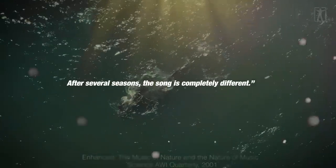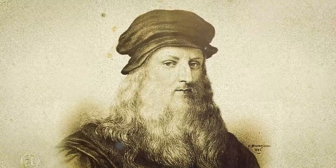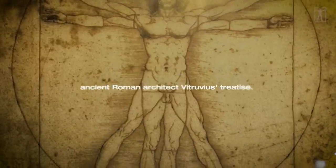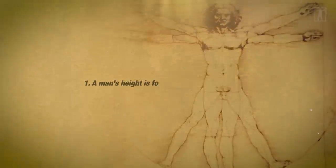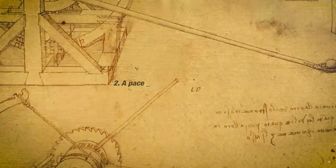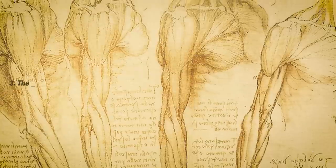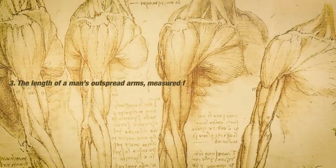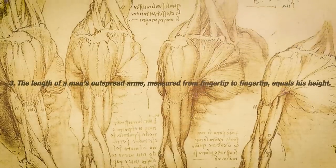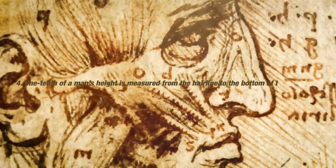Leonardo da Vinci studied the proportions of the male human body as described in ancient Roman architect Vitruvius' treatise. Number one, a man's height is four cubits and thus 24 palms. Number two, a pace is equal to four cubits. Number three, the length of a man's outspread arms measured from fingertip to fingertip equals his height. Number four, one-tenth of a man's height is measured from the hairline to the bottom of the chin.